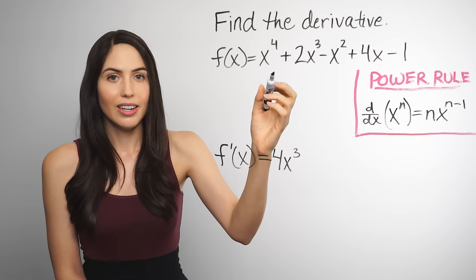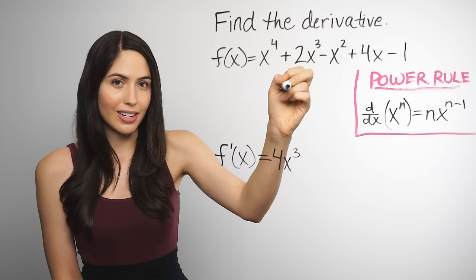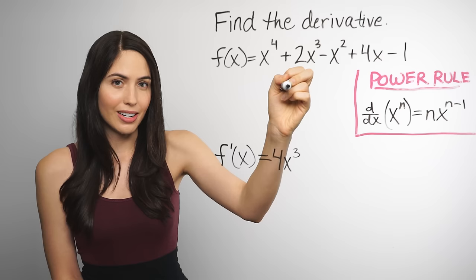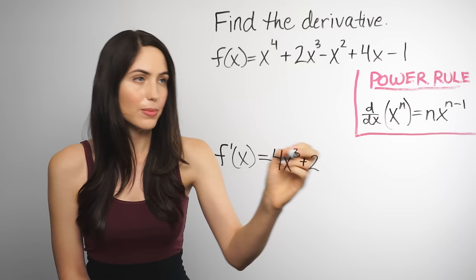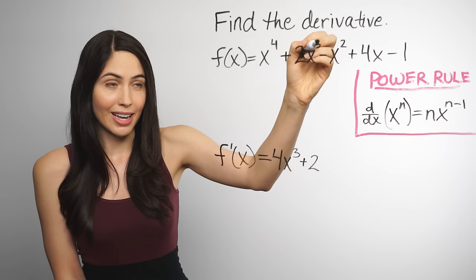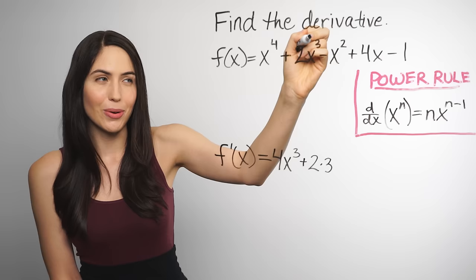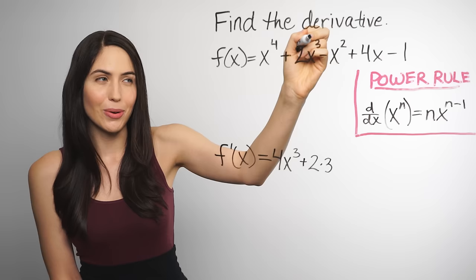Let's look at the next term: 2x to the third power. This looks very similar, but it has this 2 multiplied in the front. When you have a constant multiplied in the front of the term, you can keep the constant and then take the derivative of the rest of the term — that's the constant multiple rule. So we keep the 2, and then take the derivative of x cubed using the power rule, since it's a power of x. We bring down the power of 3 to the front as another constant, times 3, and then reduce the old power by 1. So instead of x cubed, we have x squared.